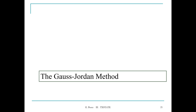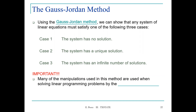This is the continuation of Lecture 1 for IE3340, Operational Research. Last time we stopped on the discussion of the Gauss-Jordan method. We discussed the Gauss-Jordan method and the steps in which you can apply this method to find a solution to a set of linear equations. The Gauss-Jordan method is very important for this class because it's going to be used as we move forward and we start formulating our linear programming models.